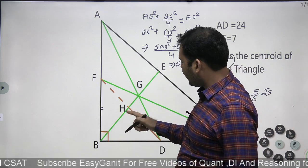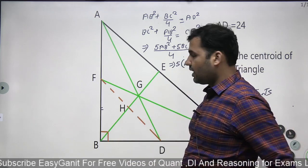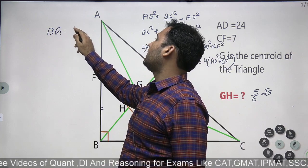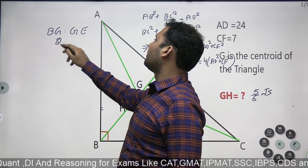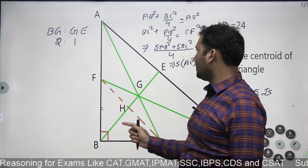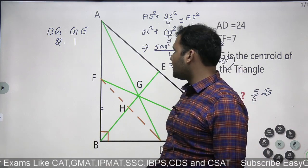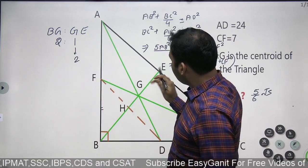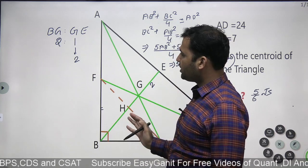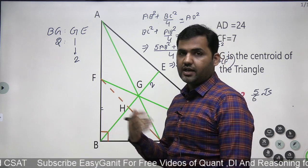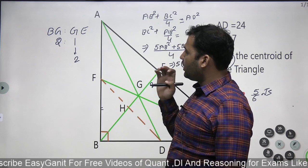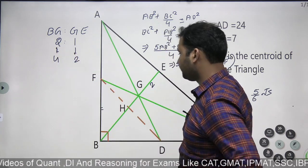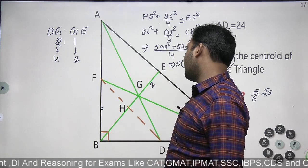For the proof that BH:HG:GE = 3:1:2: we already know the centroid divides a median in the ratio 2:1, with the larger part towards the vertex. So BG:GE = 2:1. Assuming GE = 2 for easy calculation, the complete length BG = 4, making BE = 6 total.